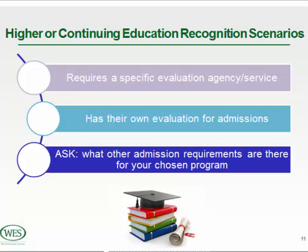I worked at a university here in Toronto and checking with the specific program is very important, because universities are large institutions and different disciplines do things in different ways. It really is crucial that you check with the specific program in the faculty you're looking to study, because I know there have been instances where an evaluation wasn't accepted for admissions in one program but would have been in another. Figure out your goal, do your research, and then take your next steps.